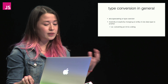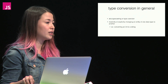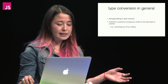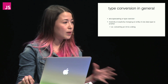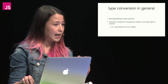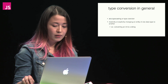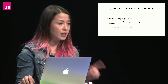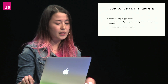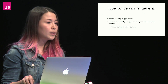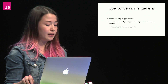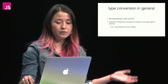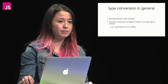But let's back up. Let's talk about type conversion in general. Wikipedia says that type conversion, otherwise known as type casting or type coercion, is implicitly or explicitly changing an entity of one data type into another. More simply, that's taking a type — for example, an int — and converting it to another type, like a string.